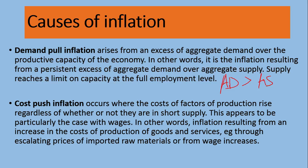The second factor is cost-push inflation. Sometimes the demand remains the same but the cost of factors of production rises regardless. Aggregate supply and aggregate demand are the same, but the cost of production increases. For example, if we are importing oil and oil prices rise in the international market, everything we produce consumes fuel — factories consume fuel — so the cost of production rises, and we cannot sell goods at the same price.